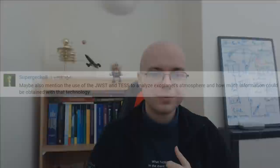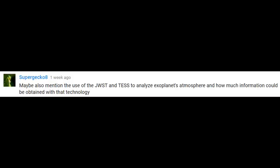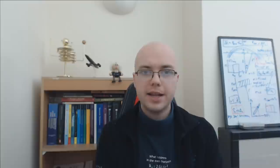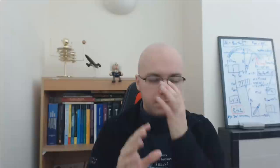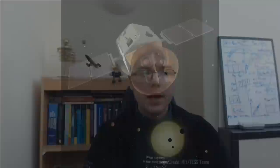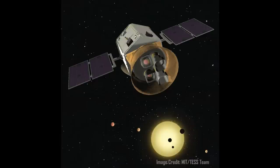SuperGecko8 asks about the usage of the James Webb Space Telescope and TESS — the Transiting Exoplanet Survey Satellite — to analyse exoplanet atmospheres. Firstly, TESS won't actually be able to measure the atmospheres of planets — it's a detection machine like Kepler, designed to find some of the closest exoplanets around very bright stars, which will be ideal candidates for follow-up with missions like James Webb. TESS will spend about two years staring at 200,000 stars, potentially seeing as many as 1,500 planet candidates, of which about 500 are expected to be less than about twice the radius of the Earth.